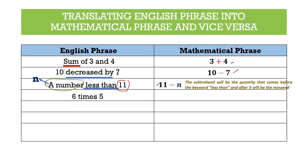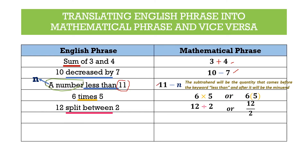For example 4, we have "6 times 5" — that is straightforward: 6 × 5. To avoid confusion between the multiplication symbol and the letter x, we can use parentheses: 6(5). For example 5, "12 split between 2" means division, so we write 12 ÷ 2. Another way to write a quotient is using a fraction: 12 as the numerator and 2 as the denominator.